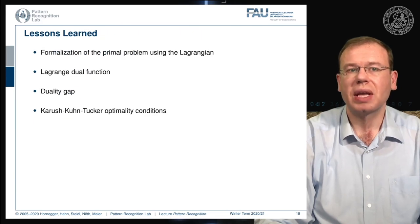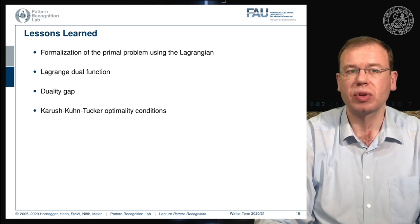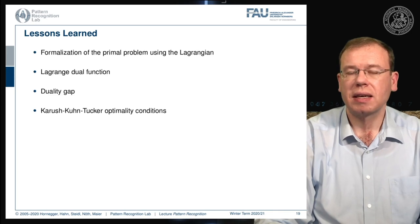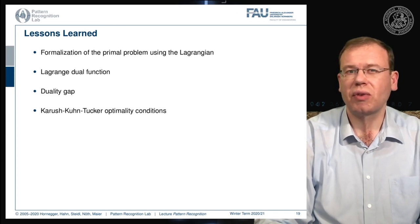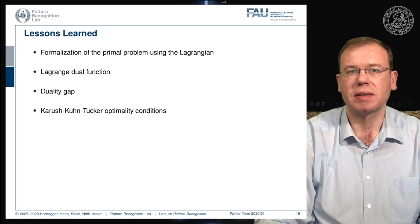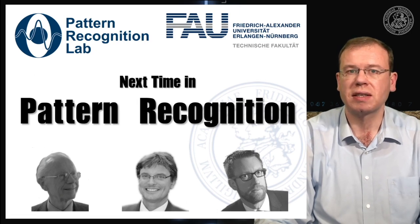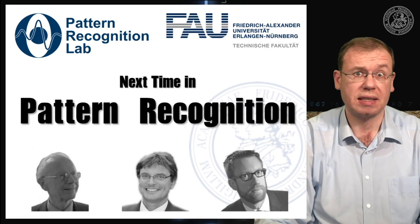To summarize: we found a way of formalizing the primal problem using the Lagrangian, we introduced the Lagrange dual function that eliminates x using the infimum, and we looked into the duality gap. When there is no duality gap we have the KKT conditions and the concept of complementary slackness. In the next video we will immediately apply these observations to support vector machines.